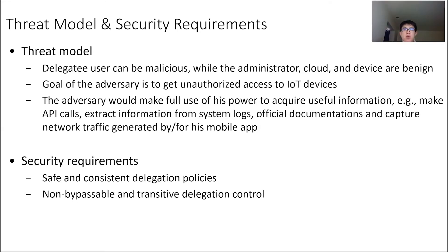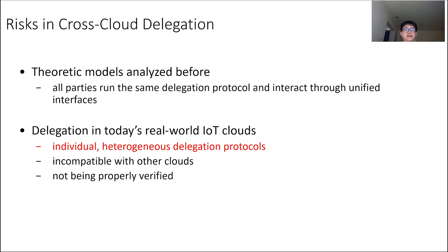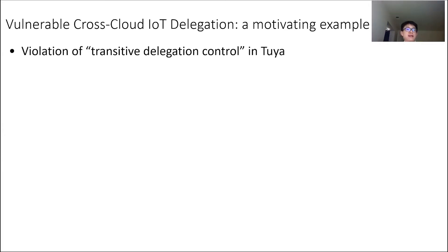We further summarize the security requirements for IoT delegation. First, it is important that the delegation policy among all parties involved in the delegation chain are safe and consistent. Further, the enforcement of a delegation policy is expected to be comprehensive and non-bypassable, blocking all avenues of unauthorized access. Also important is transitive delegation control — once a delegator revokes its delegatee's access right, all downstream parties in the delegation chain should follow suit. The risk is that today's IoT clouds often utilize individual and heterogeneous delegation protocols that may not be compatible with those of other clouds.